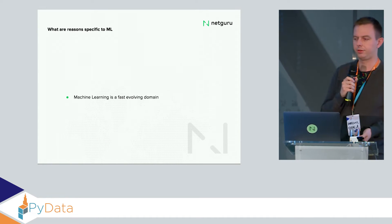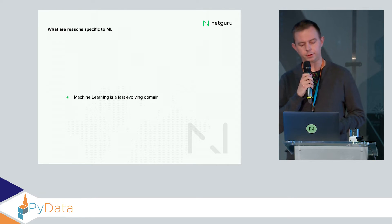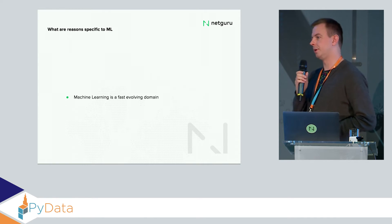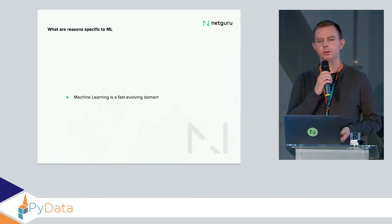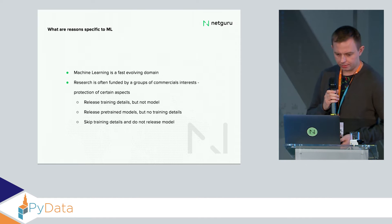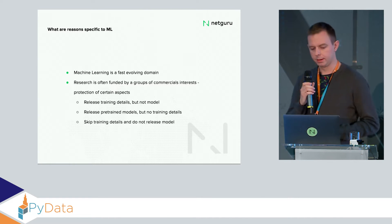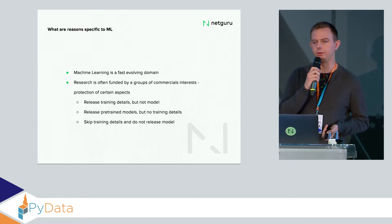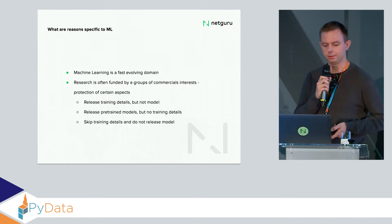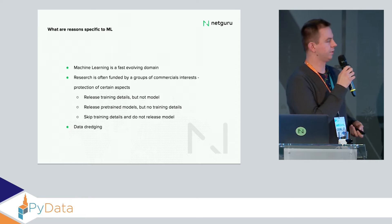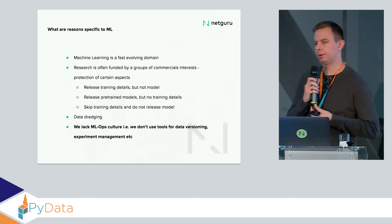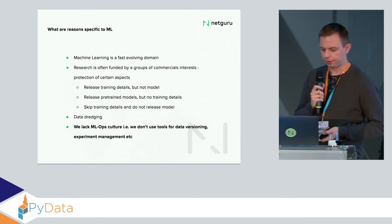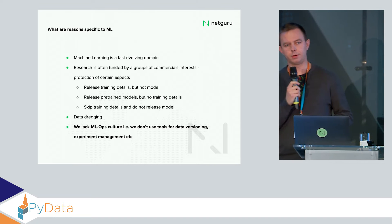What are the specific reasons machine learning has so many difficulties achieving reproducibility? The first, quite trivial: machine learning is very fast-evolving — every Monday morning you check your newsletters and read about a new generative adversarial network. The second is that research is usually funded by groups with commercial interests, so they don't release a model, training details, data, or sometimes anything. There's also the common problem of data dredging. And the issue I want to focus on today is that we lack MLOps culture — basically DevOps culture in the machine learning community — so we don't do data versioning and we don't manage our experiments in a reproducible manner.